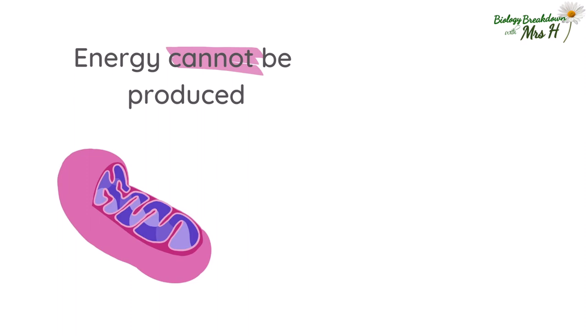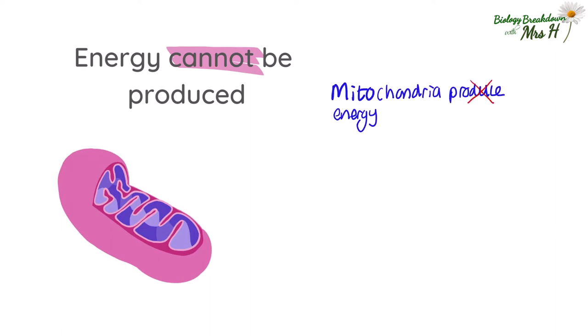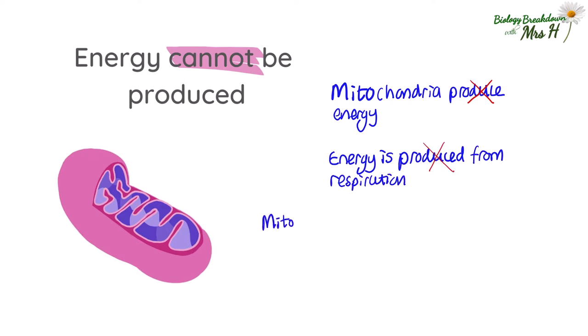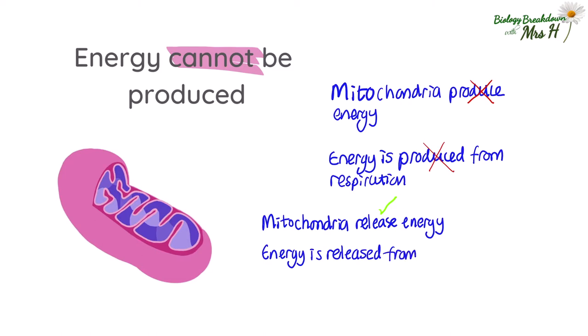First up: energy cannot be produced. This is the most common mistake I see. Mitochondria do not produce energy and energy is not produced from respiration. Instead you need to write that mitochondria release energy, or that energy is released from the process of respiration.